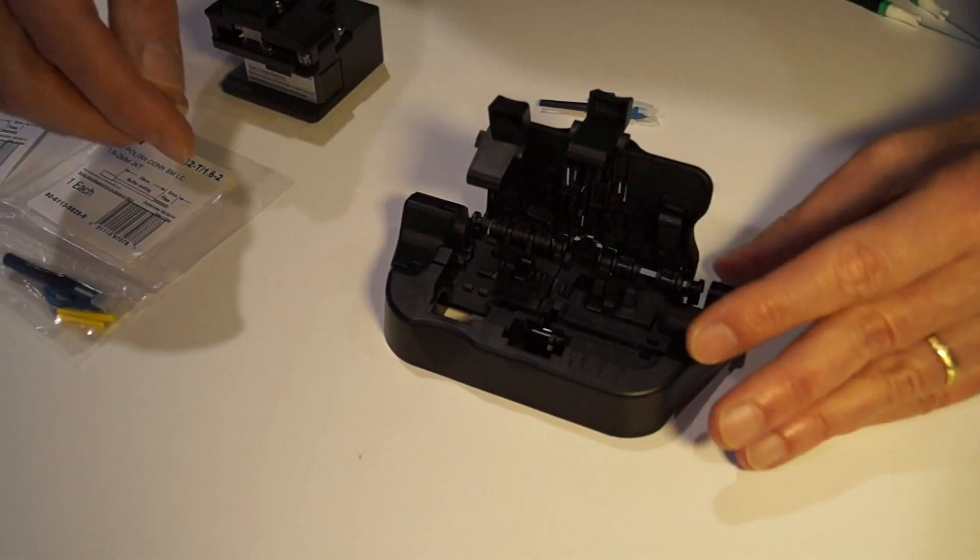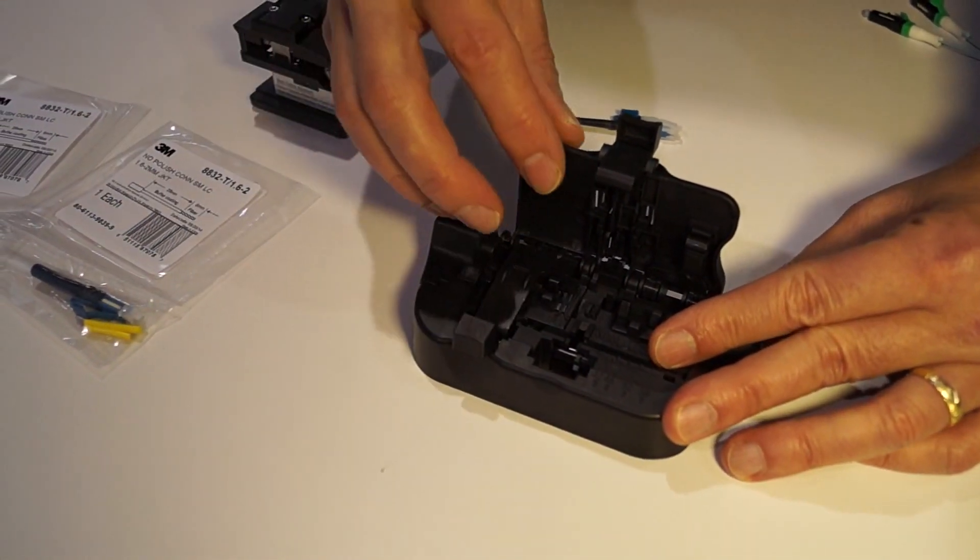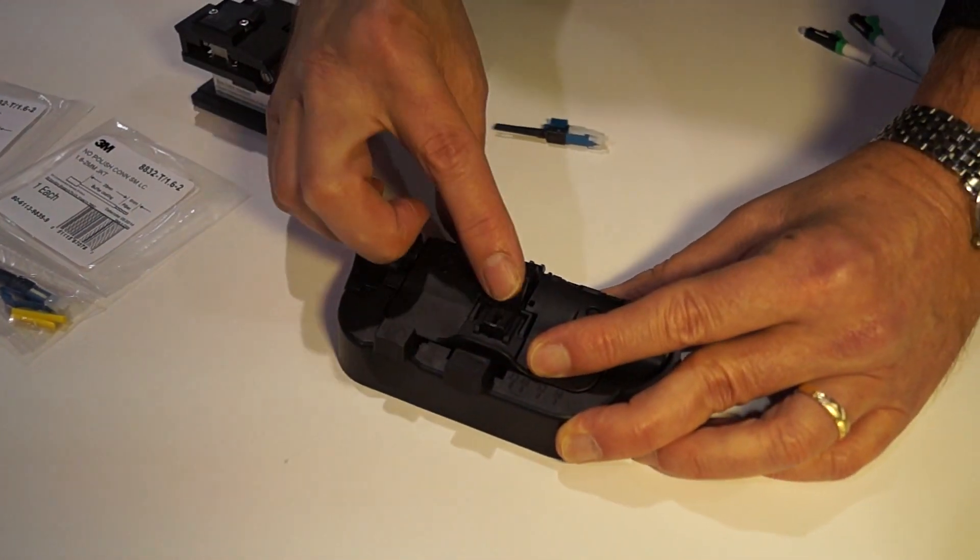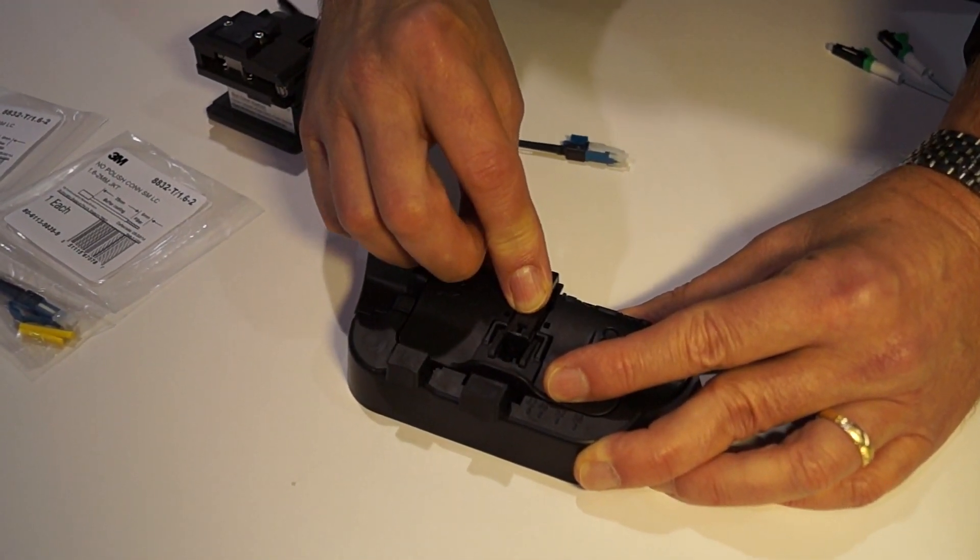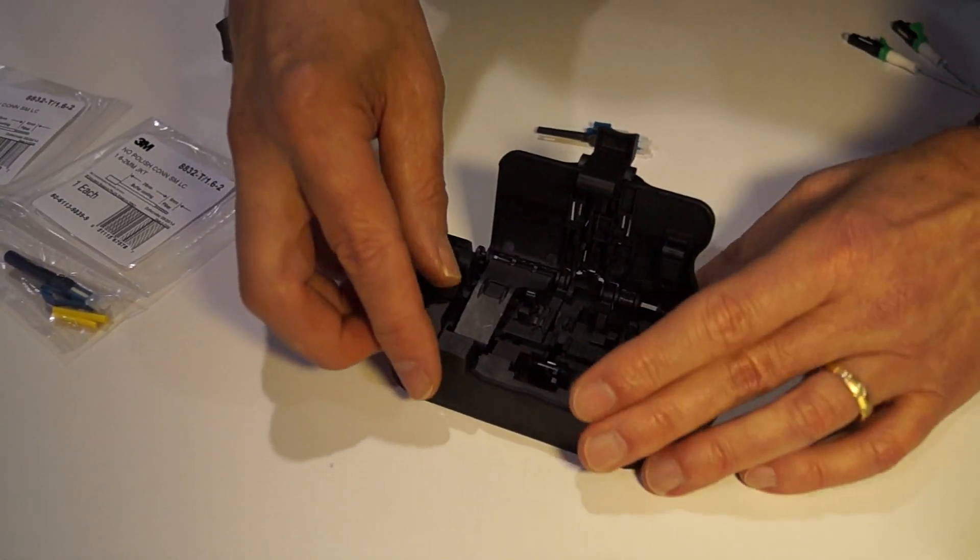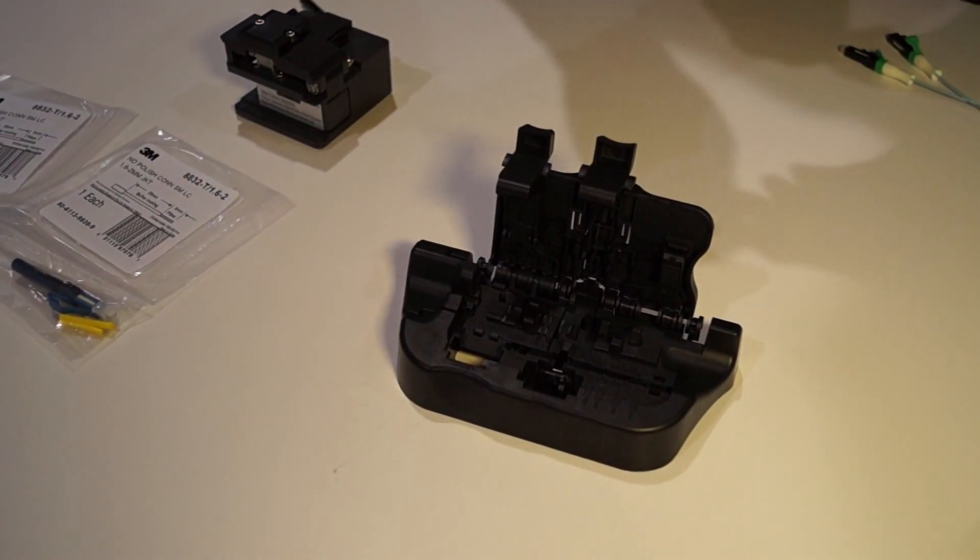So, you open it up, insert the fiber in here, lock it down. Step one. Then you close down the cleaving element. Step two. Then you actuate the cleave. Release. The shard is captured here. You can dispose of it. Then you release the fiber. It's now properly cleaved to the precise length.